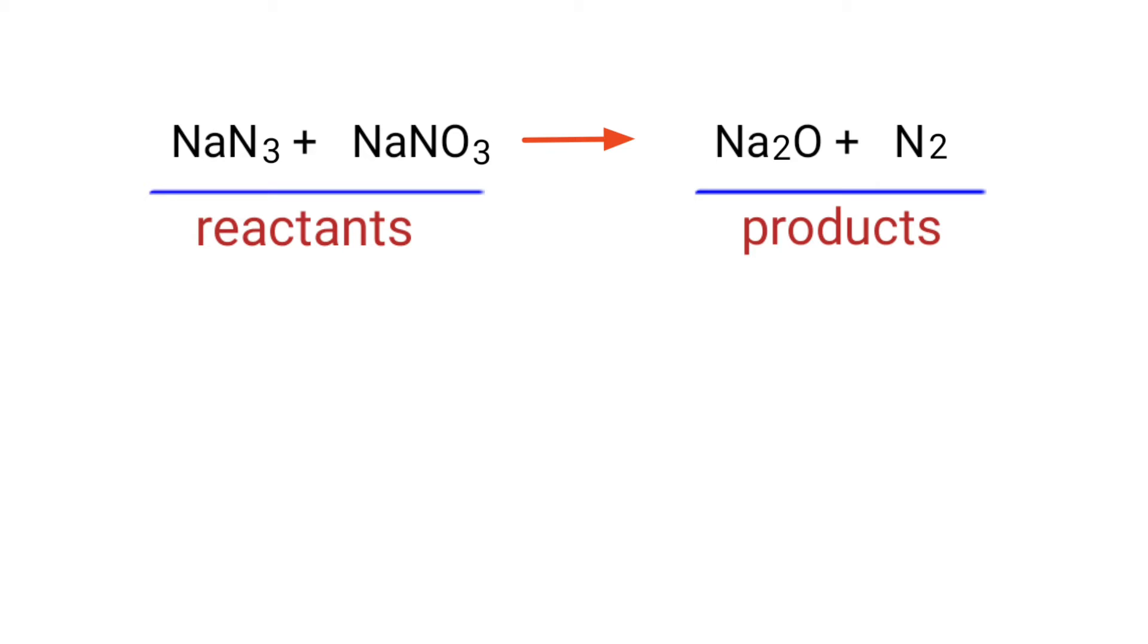In this equation, the reactants are sodium azide and sodium nitrate, and the products are sodium oxide and nitrogen.